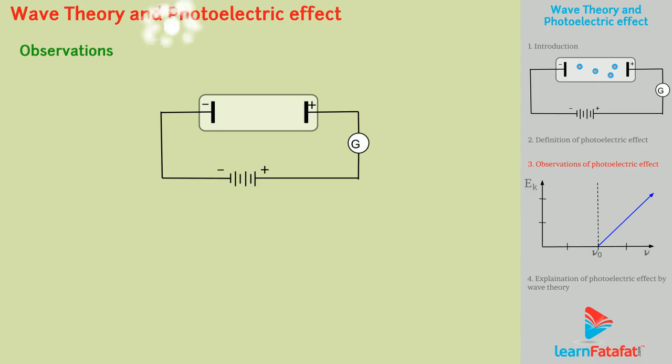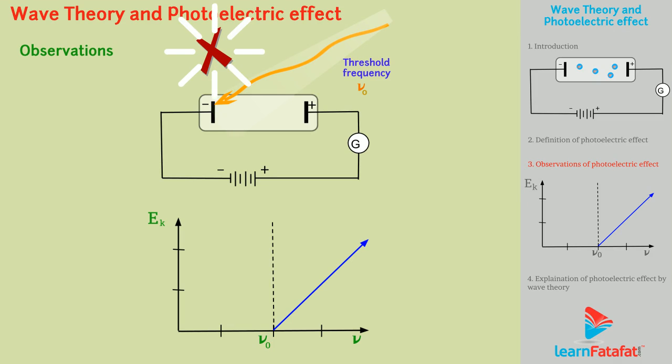Observations of photoelectric effect are: If the frequency of incident light beam is below a certain minimum frequency called threshold frequency nu zero, then photoelectric effect will not occur.